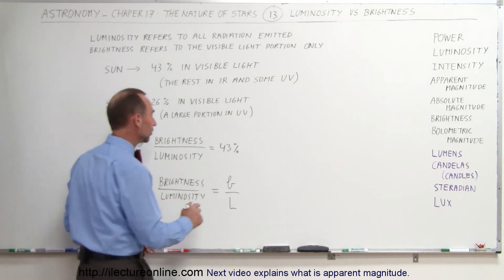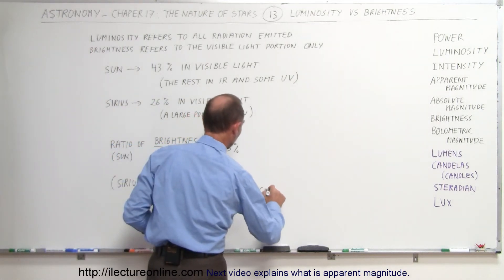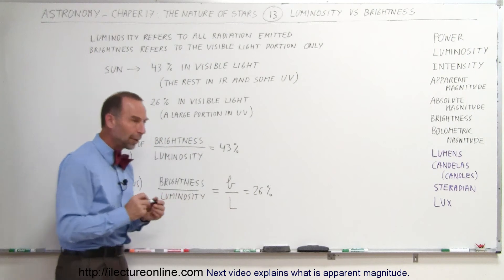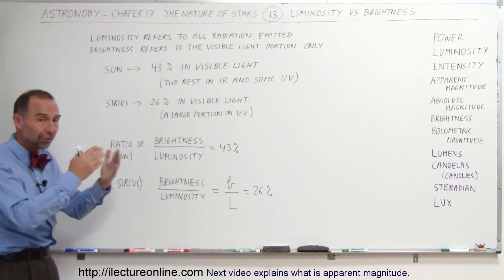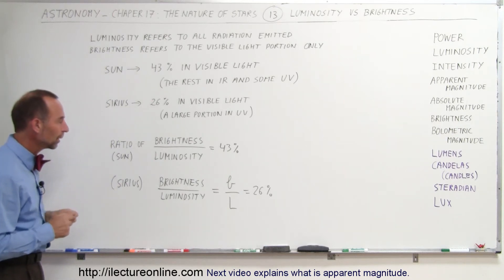So that ratio for Sirius is only 26%. And so when we talk about brightness, we talk about the portion of the electromagnetic radiation that's being emitted from the star that's in the visible portion only.